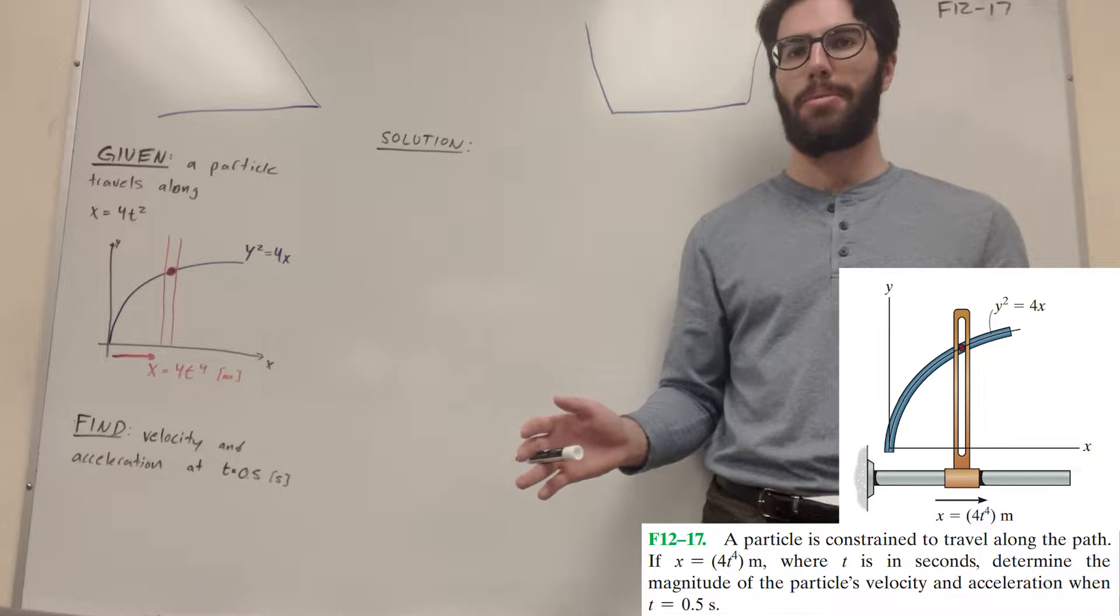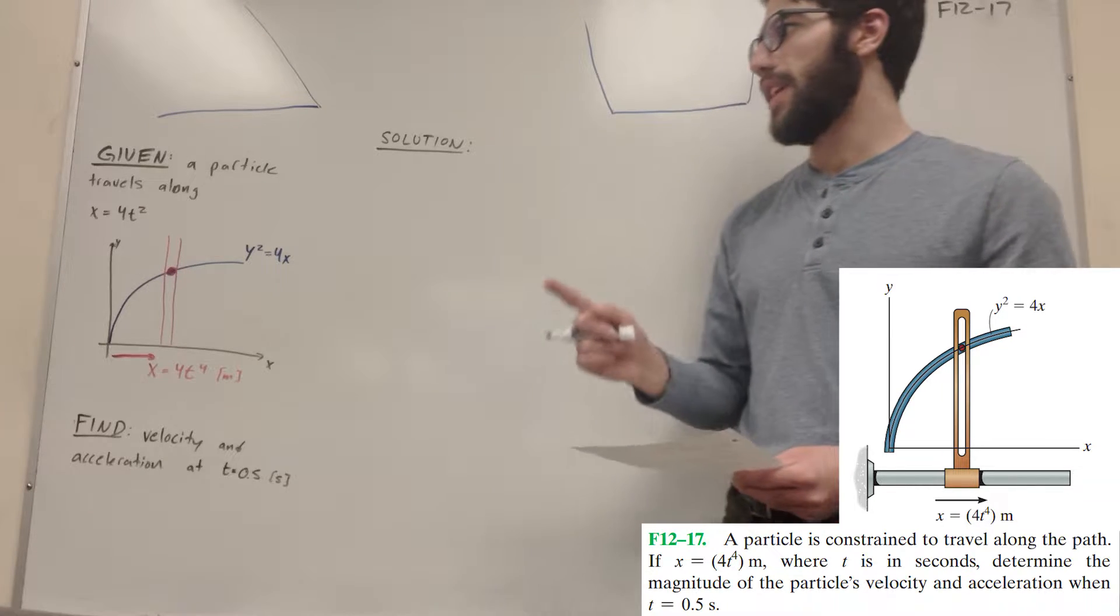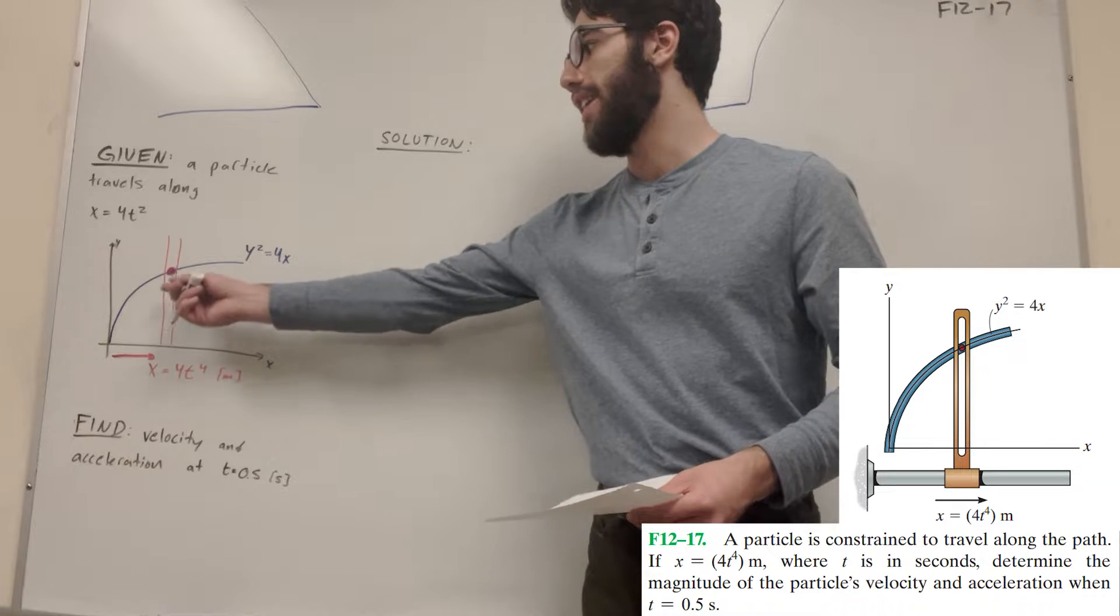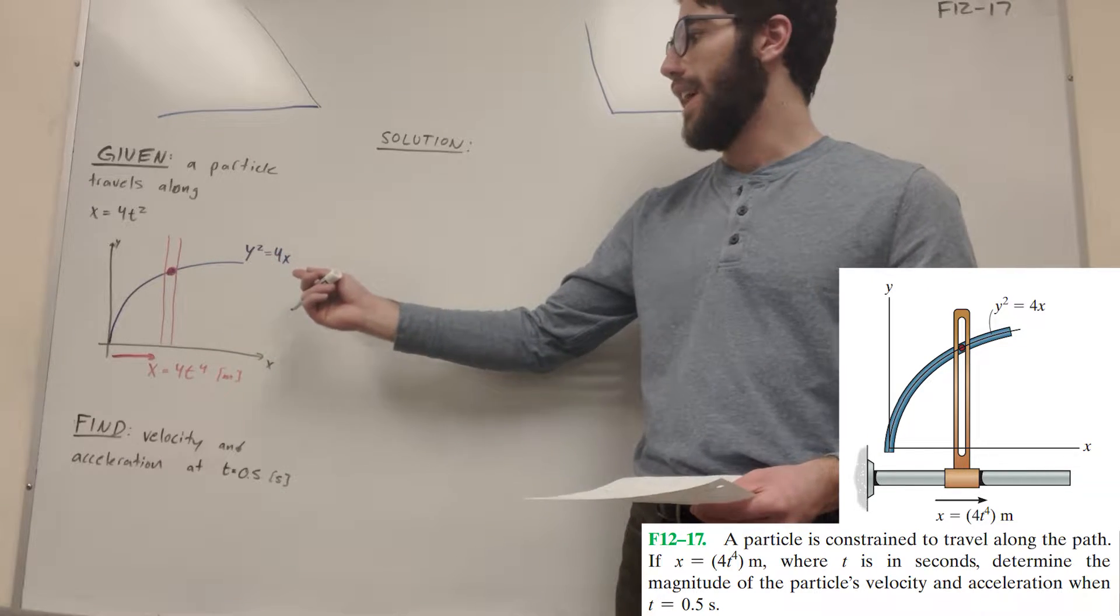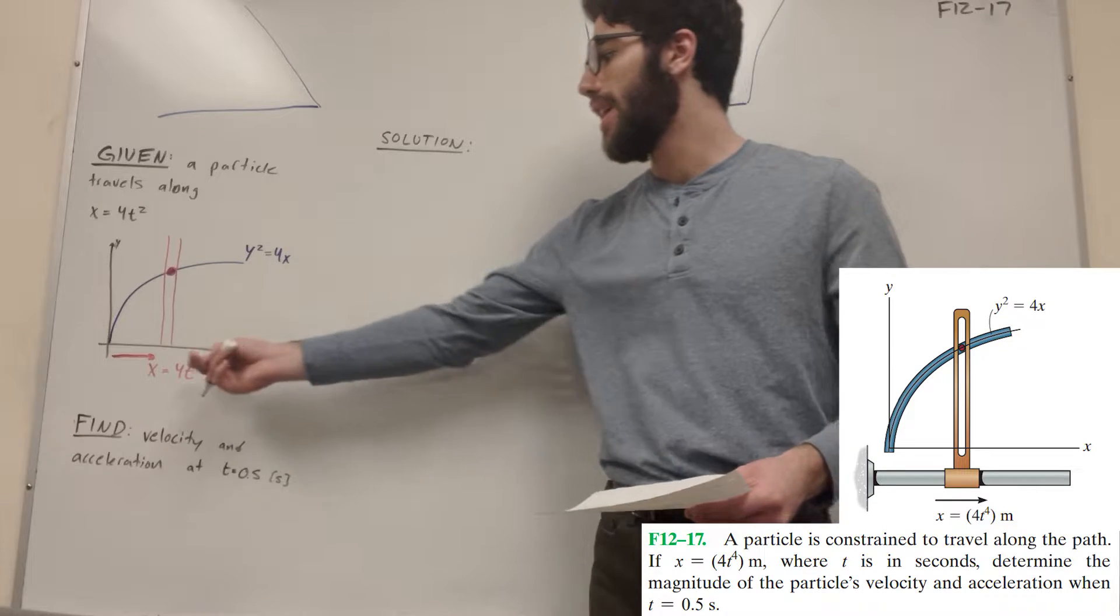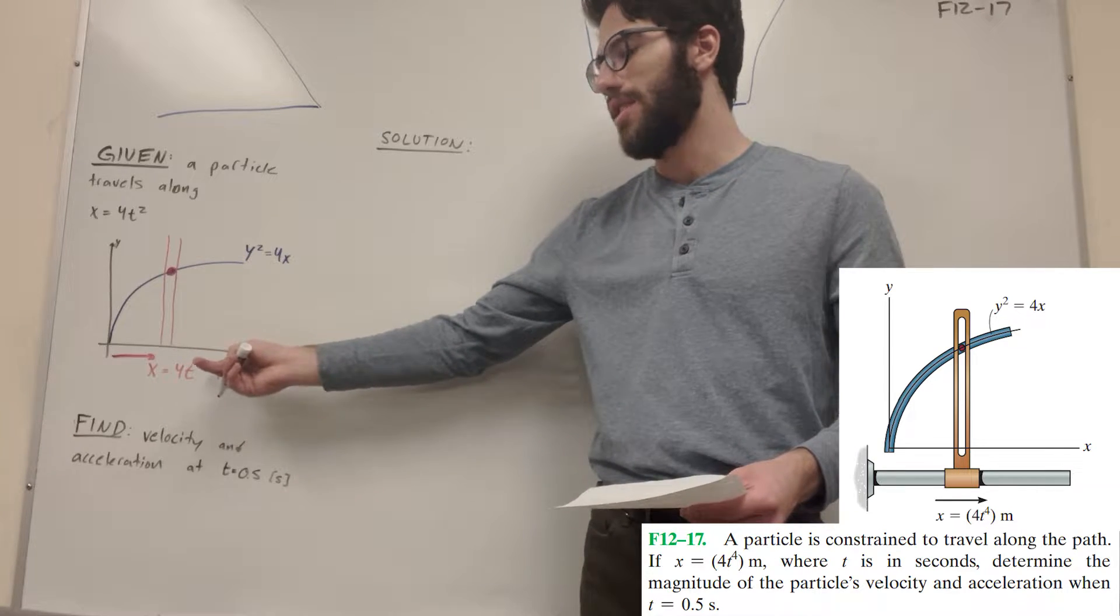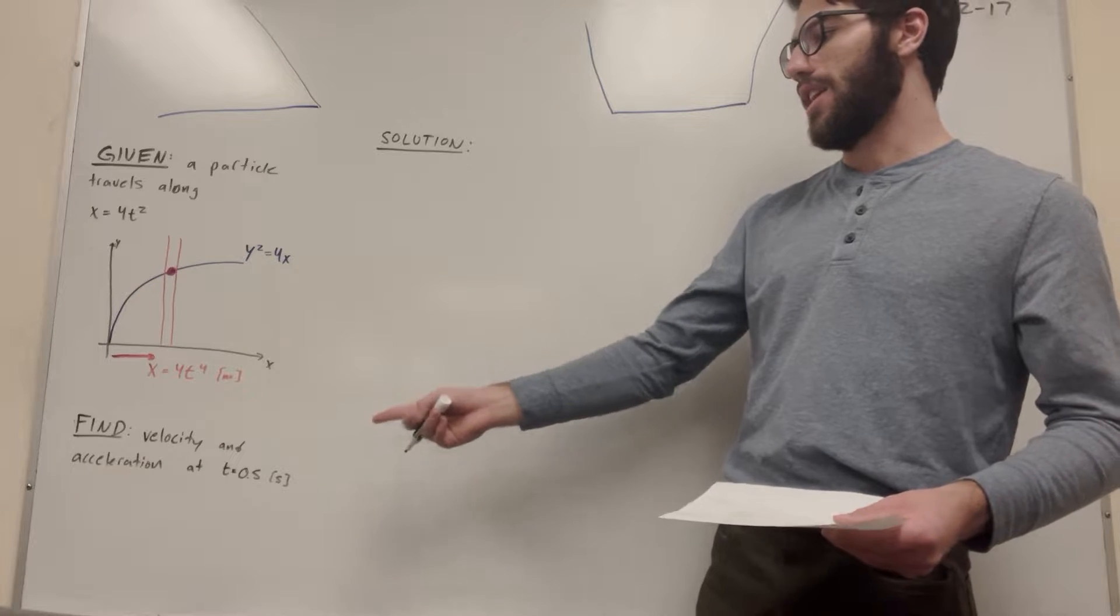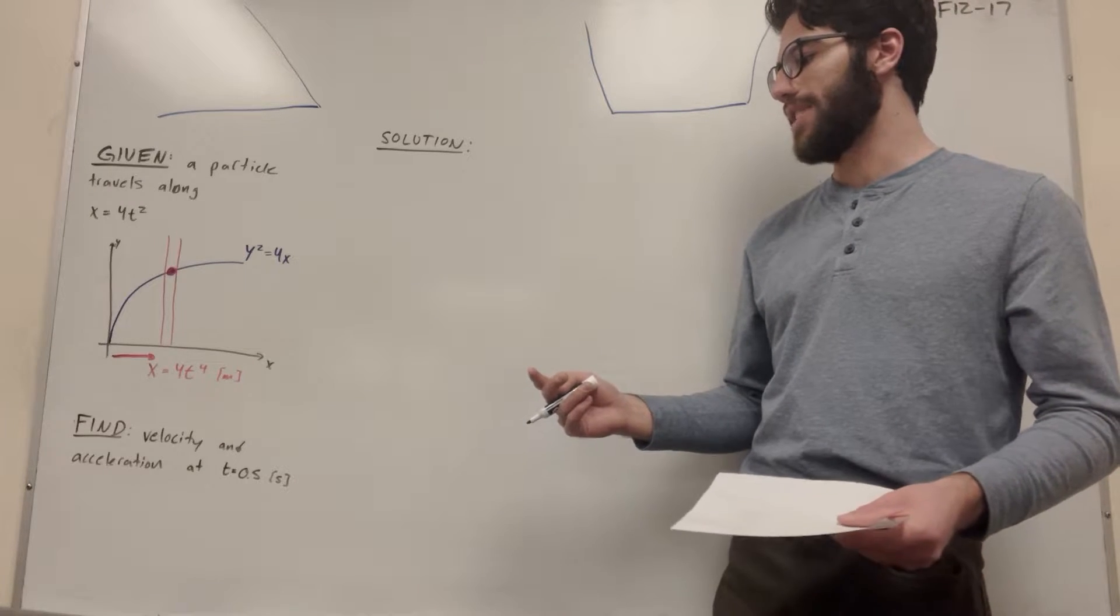What's up, Cal gang? Welcome to this dynamics problem. So let's see what we're given. We're given that a particle is bound to this line of y equals 4x. And then this bar moves to the right with a time x equals 4t to the 4th.